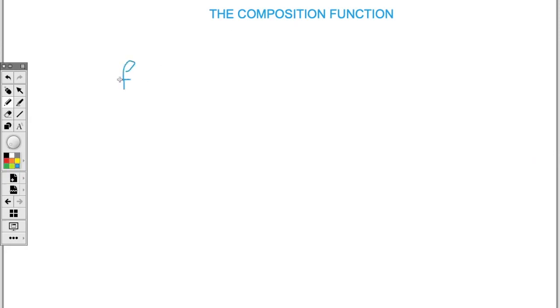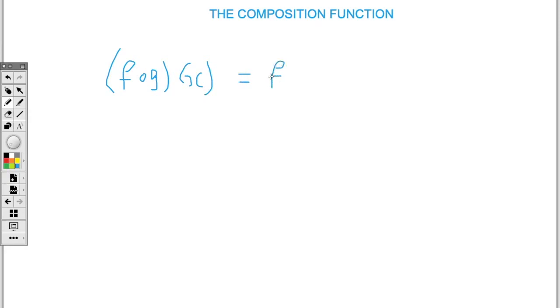A common way to write a composite function is one way. For some persons, they're more familiar with the composite function written in another form.